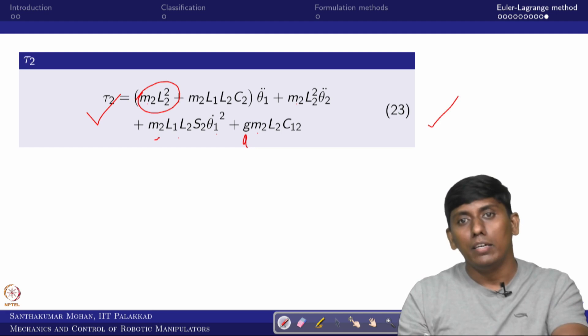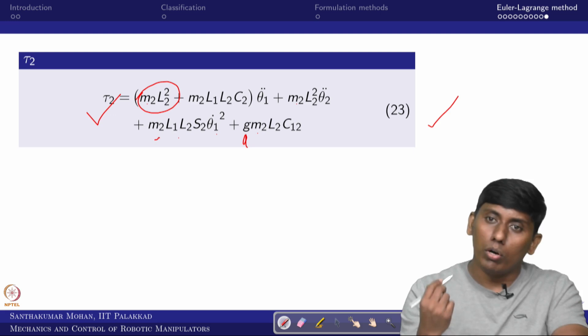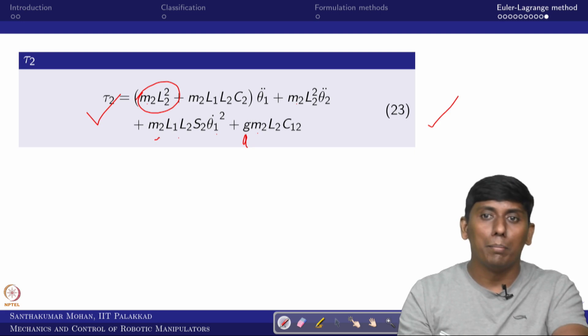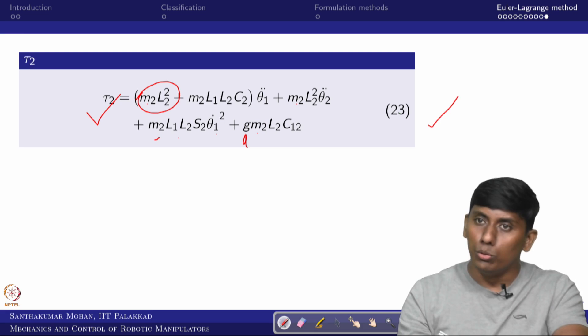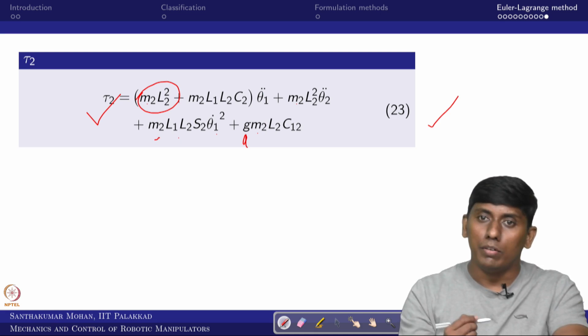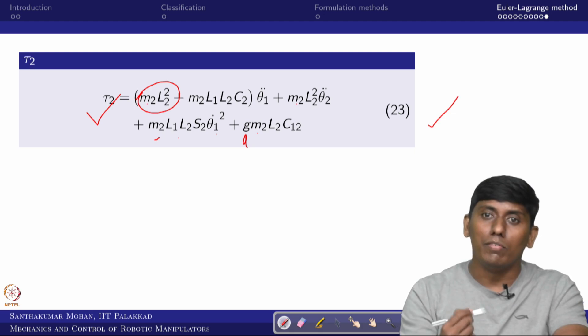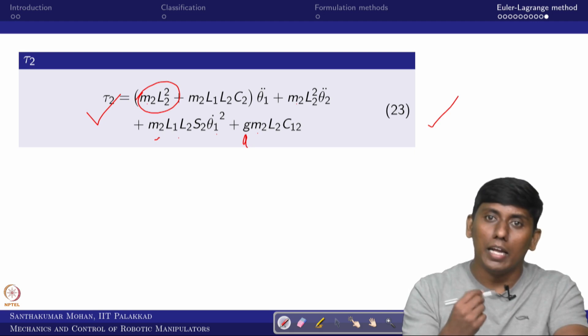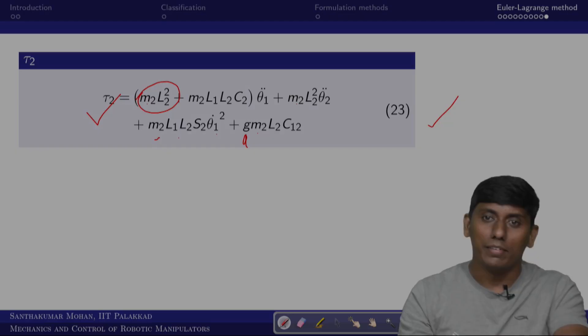We can verify this same manipulator example using the Newton-Euler method in the next lecture, and check whether the equations match. After that, we will close the dynamics part, then move to the state-space form of the equations of motion, and finally look at more examples on the simulation side. With that, this particular lecture is closed. See you then — thank you, bye.